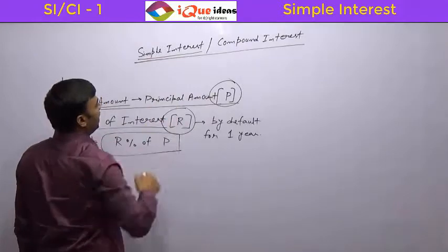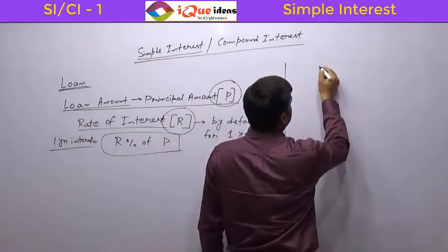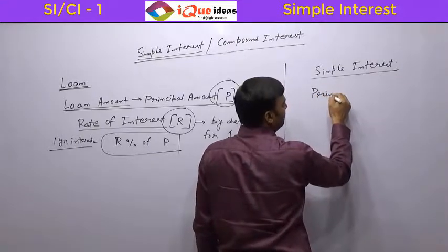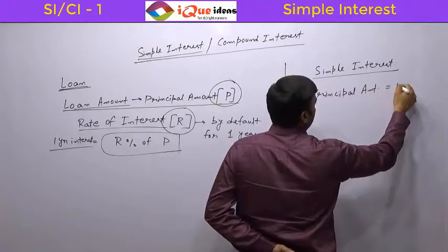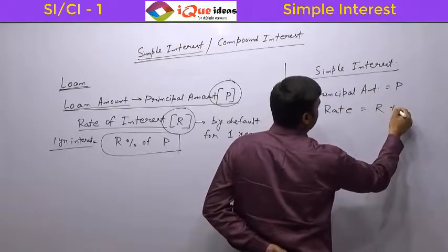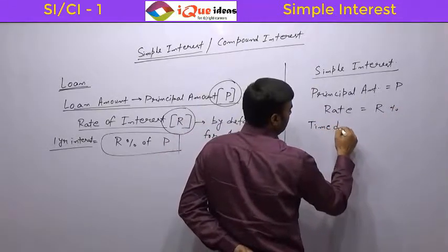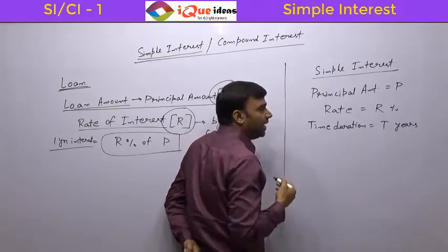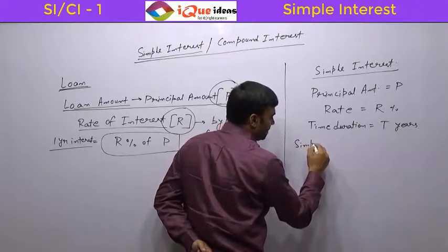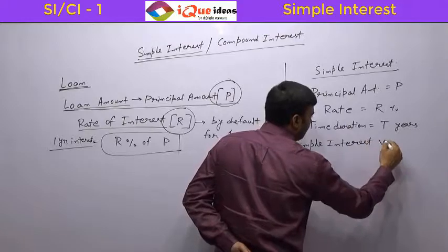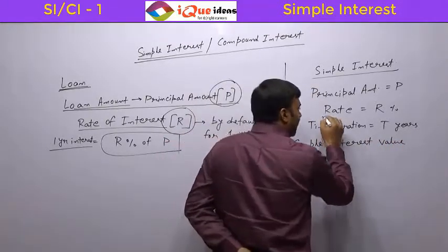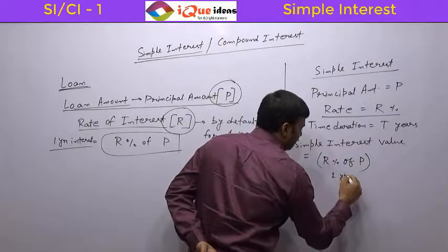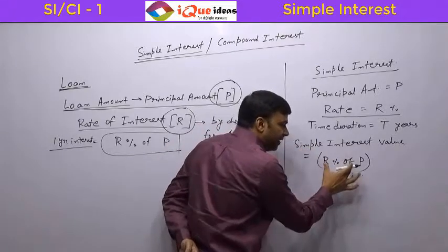Now let us look at simple interest first. In case of simple interest, if the principal amount or loan amount is P, the rate is R percent — which we know is for one year — and the time duration is T years, how will you calculate the simple interest value? We know that one year interest will be R percent of P, and in case of simple interest, every year the value of interest remains the same.